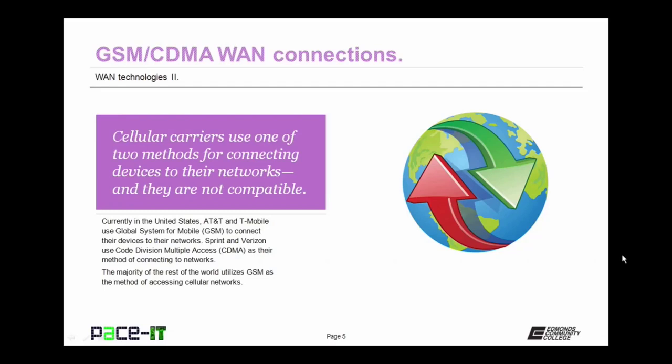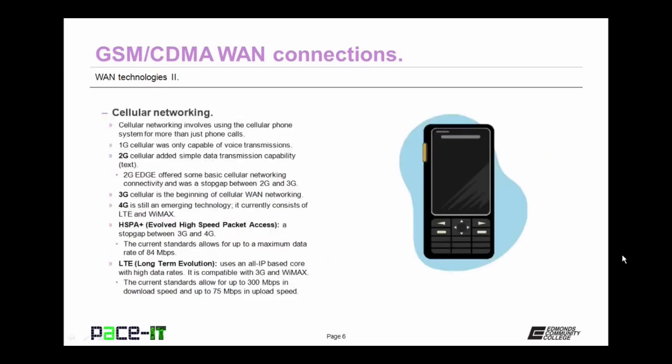Currently in the United States, AT&T and T-Mobile use the Global System for Mobile, or GSM standard, to connect their devices to their networks. Both Sprint and Verizon use Code Division Multiple Access — CDMA — as their method of connecting to networks. Those two standards are not compatible. The majority of the rest of the world utilizes GSM as the method for cellular network access.